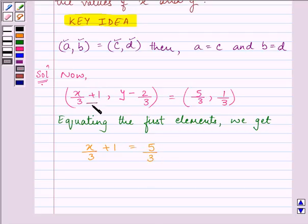Now, here, this will represent our a, this will represent our b, this is c and this is d. So, as we discussed above, if we have been given equality of two ordered pairs, then the corresponding first parts are equal and the corresponding second parts are equal.